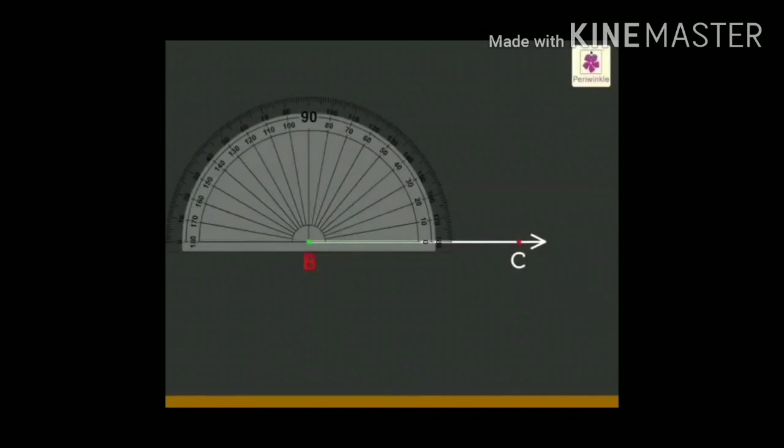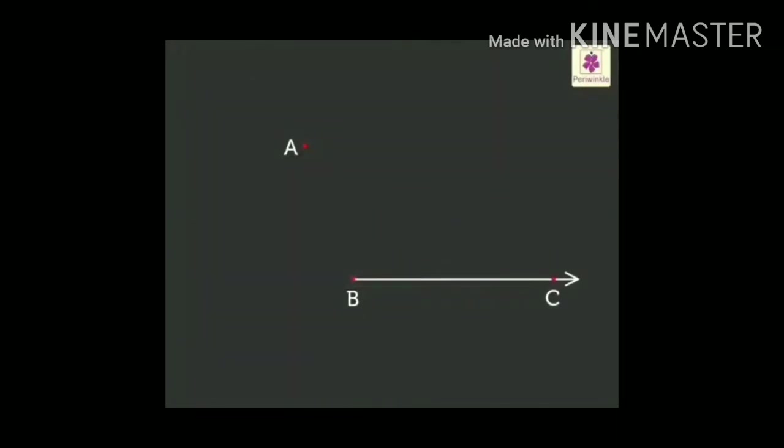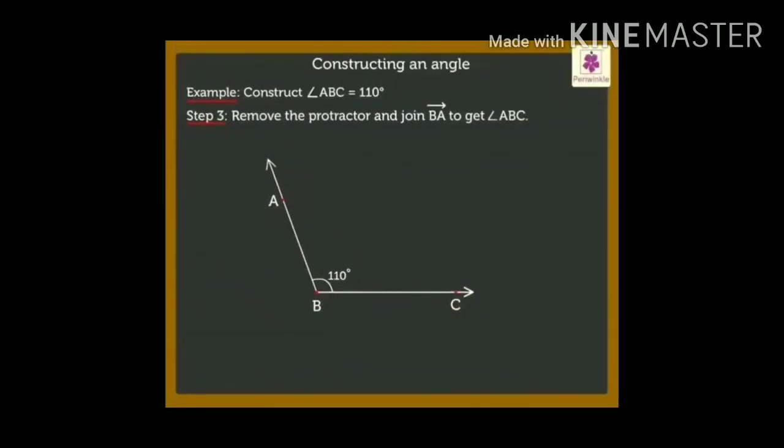Step number 2. Keep your protractor in such a way, the central point of the protractor coincide the point B. Now, we will find where is 110 degree. Mark the point A. Step number 3. Remove your protractor from there. Join it with the help of scale. You will find angle ABC 110 degree.